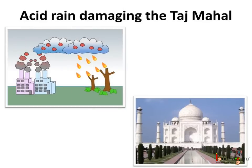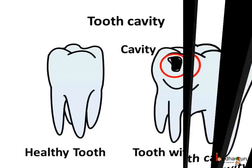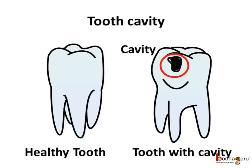Acid rain is also damaging the stones of Taj Mahal, the pride of India. The same substance, acid, is produced by germs rotting food in the teeth, and this acid decays the teeth causing cavity — thus we have tooth cavity.